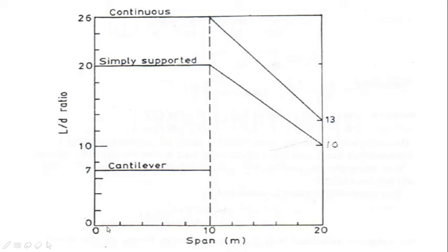Now this graph clearly says that this is span in meters: 0 meter, 10 meter, 20 meter, whereas this is L/D ratio: 7, 10, 20 and 26, where L is span and D is depth. So for cantilever L/D basically is 7; for simply supported it is 20; and for continuous it is 26. But it is interesting to see that these three things are applicable when we have L = 10 meter.